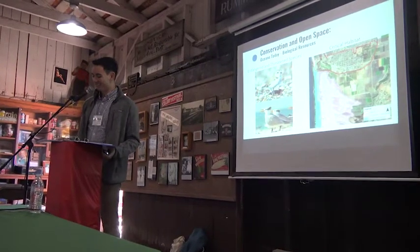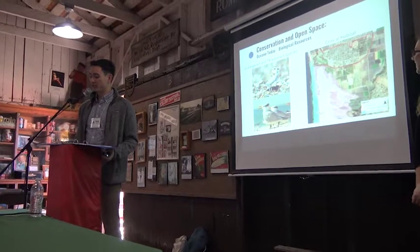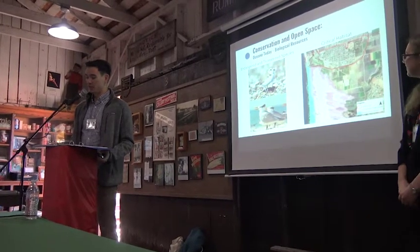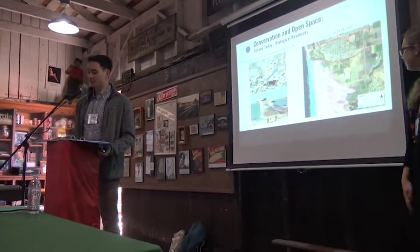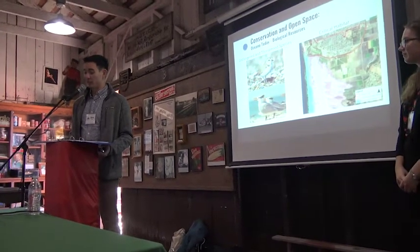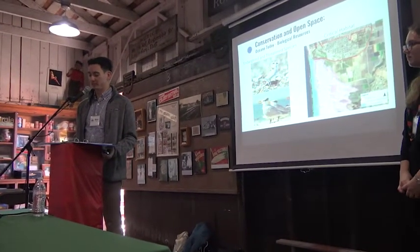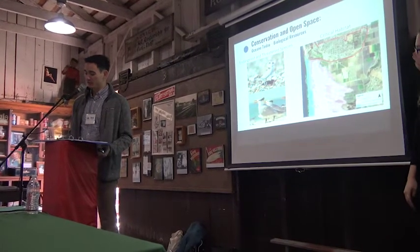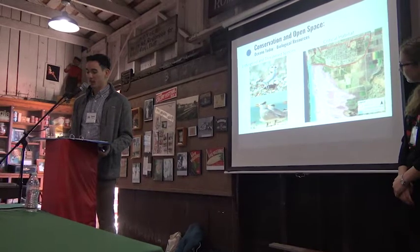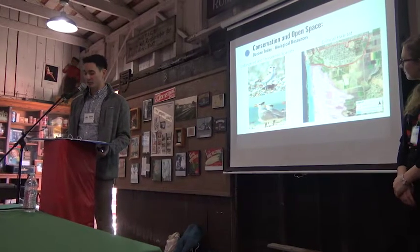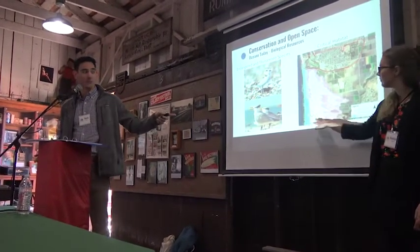Oceano contains numerous biological resources, mainly within the areas of the Oceano Lagoon and the Oceano Dunes. There are 19 endangered and threatened species in the area, including 7 plant and 12 wildlife species. Two of these species, the Western Snowy Plover and the La Grossiosa Thistle, are designated as critical habitat, as shown in the turquoise and pink areas on the map.